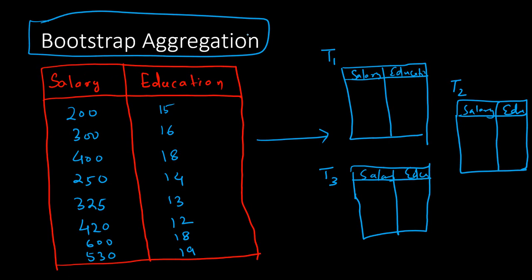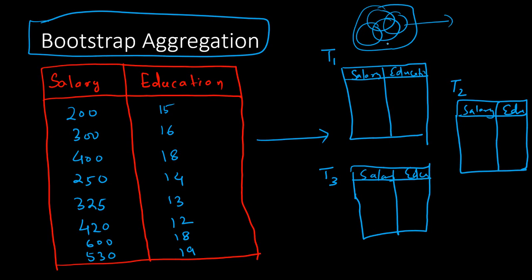Bagging stands for bootstrap aggregation. Bootstrapping is sampling from the same sample - taking subsamples repeatedly. We have a bigger sample and take smaller overlapping samples, because the same observation can appear in different subsamples. Taking subsets of observations where observations are replaceable, and taking several samples randomly from this bigger sample, is known as bootstrapping. This allows us to fit multiple decision trees, since when you have multiple samples, you can fit multiple decision trees.